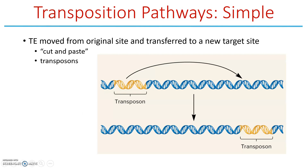There are two pathways. The first is simple transposition — TE throughout this lecture will refer to transposable elements. In simple transposition, a transposable element moves from one site to another. It's like cut and paste: we take it out of chromosome 1 and stick it into chromosome 2. These are called transposons, and that's simple transposition.